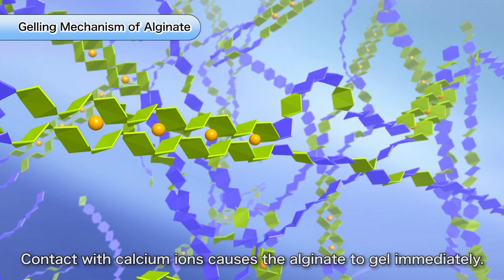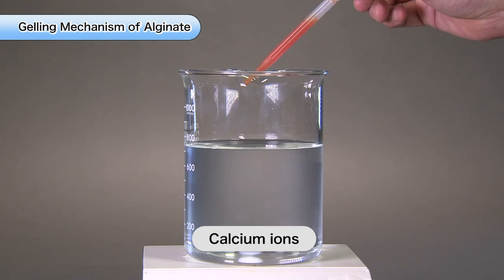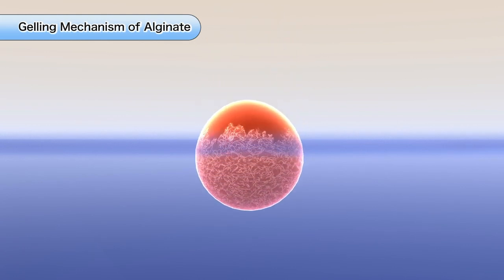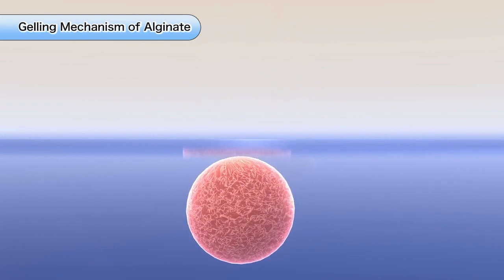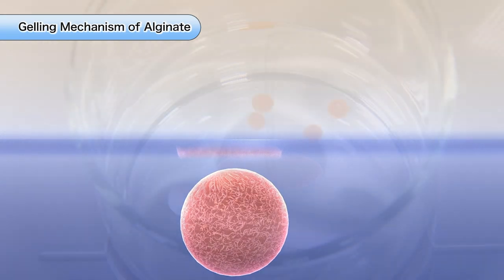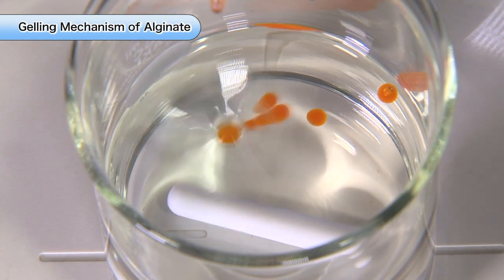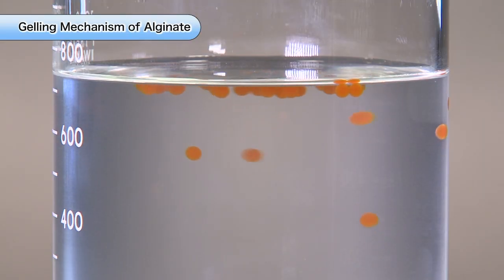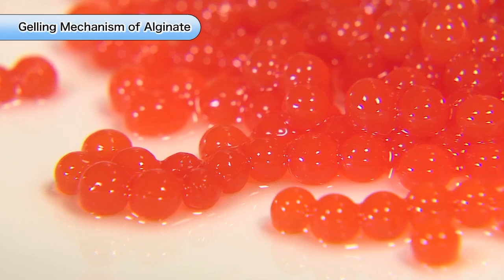So, alginate gels instantly in contact with calcium ions. When an aqueous solution of sodium alginate is added dropwise to an aqueous solution of calcium salt, it gels instantly wherever it comes into contact with calcium ions. The aqueous solution of sodium alginate forms beads as it gels due to surface tension, creating a jelly.